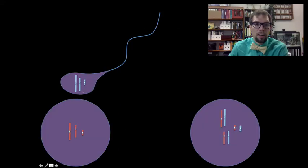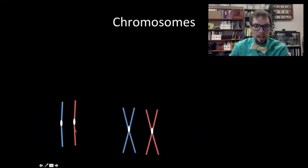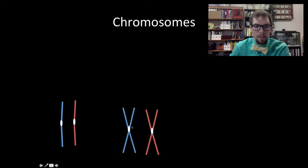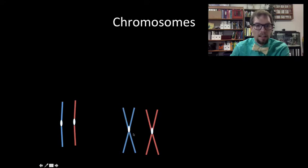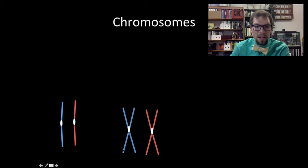One of these chromosomes originally came from your father, from the sperm cell, and the other one originally came from your mother, from the egg cell. When these cells replicate, they start to look like structures with sister chromatids connected at the centromere. These are actually considered the same chromosome because the sister chromatids are attached — but you have twice the genetic material because the DNA has replicated.